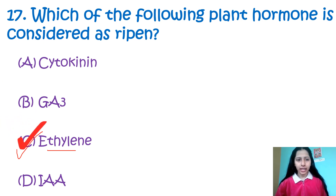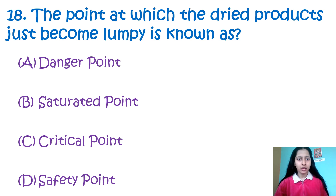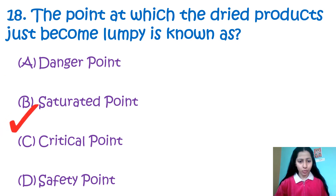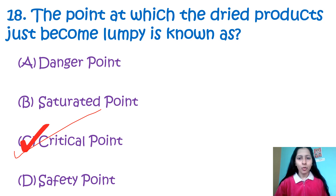Question number 18: The point at which the dried product just becomes lumpy is known as — danger point, saturated point, critical point, or safety point. My option number C is correct — the point at which a dried product becomes lumpy is called the critical point.